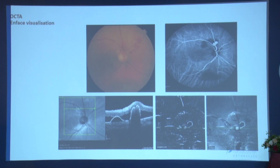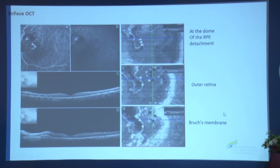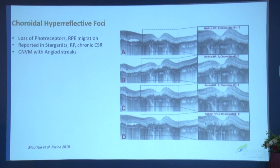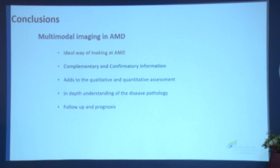En-face visualization also helps — most of the time you can identify probable polyp areas on en-face after image as well as en-face image. There is a learning curve in recognizing these findings and reaching a consensus on what's happening. The choroidal vascular index is also important, and as Dr. Sharath mentioned, hyperreflective foci, subretinal deposits, and choroidal hyperreflective foci are other features now being explored.